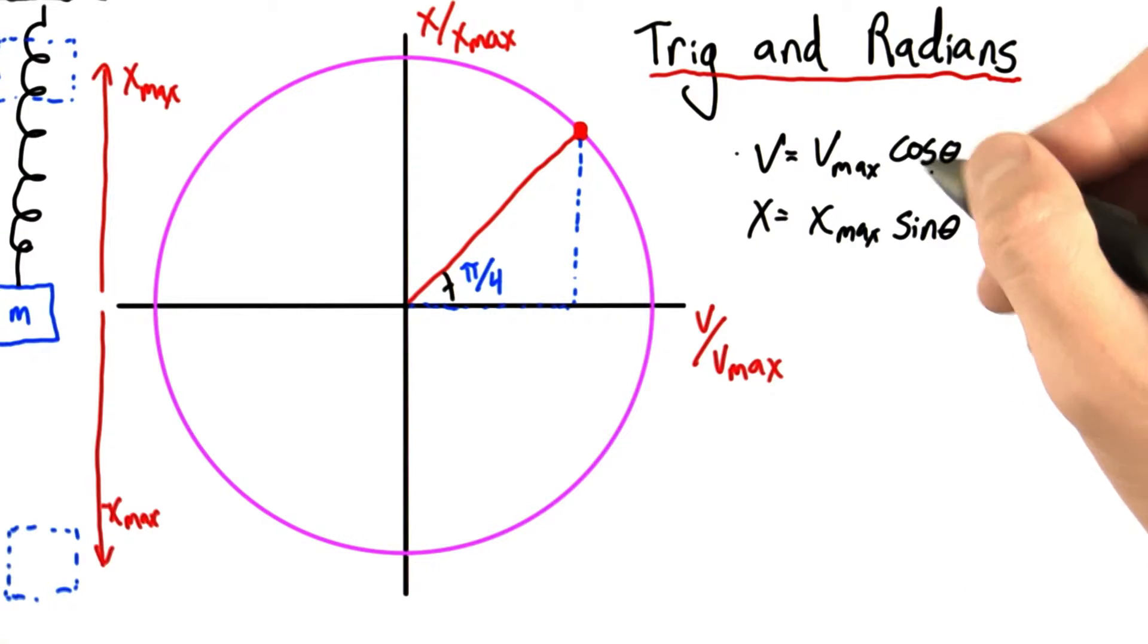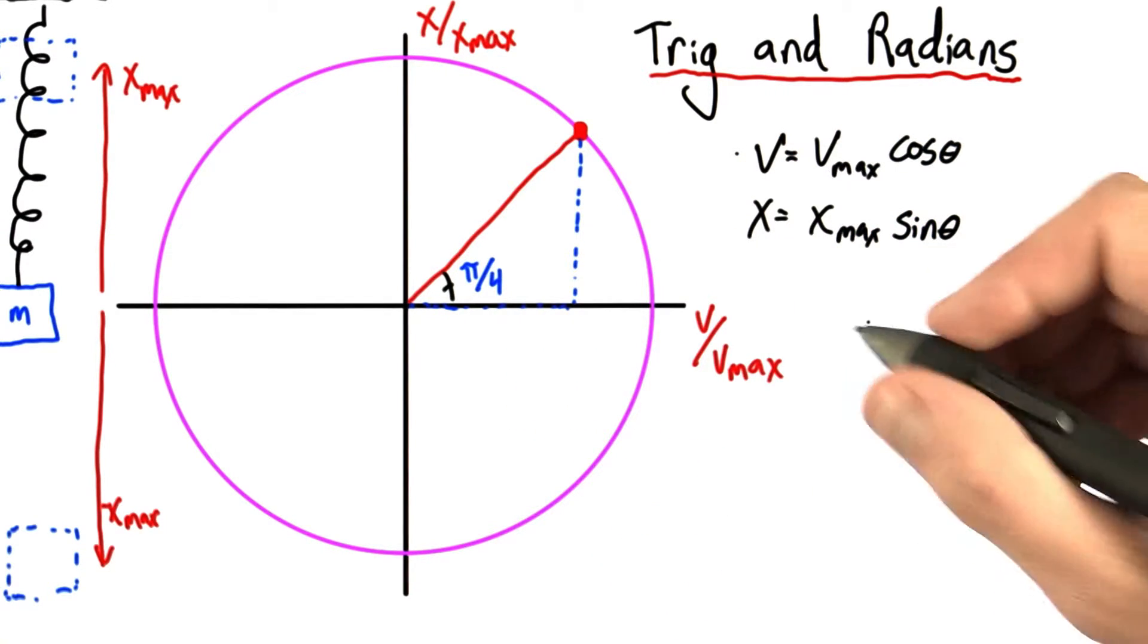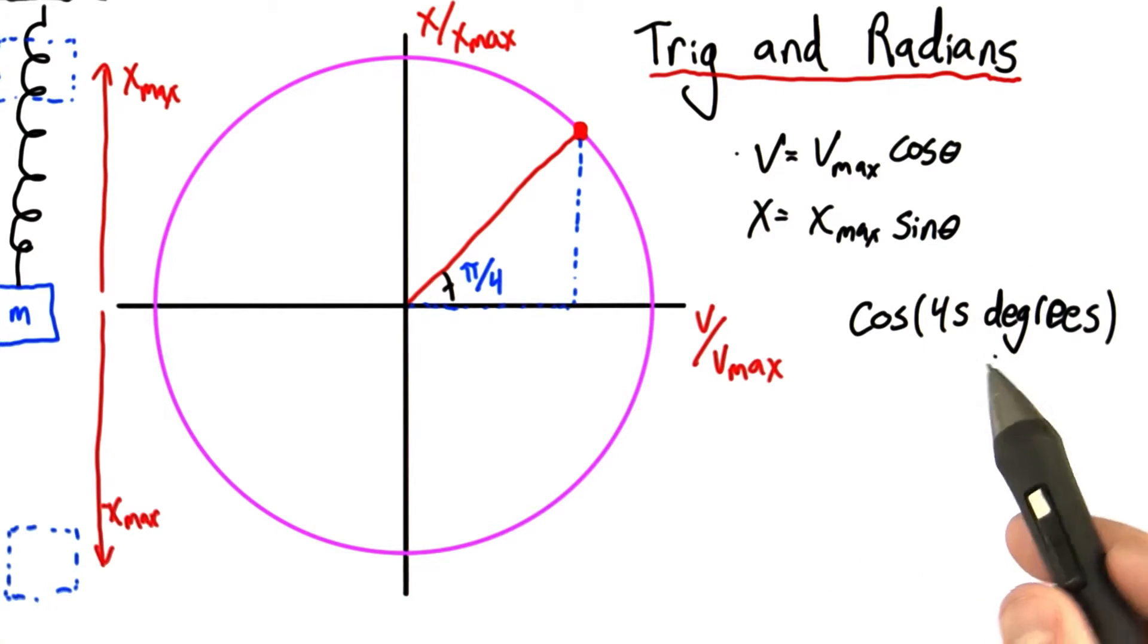Now, what's convenient is if we want to calculate, let's say, the cosine of pi over 4 radians. Remember when we were using Google before, we would type in something like the cosine of 45 degrees, and we actually had to spell out degrees? Yeah, that wasn't very fun.